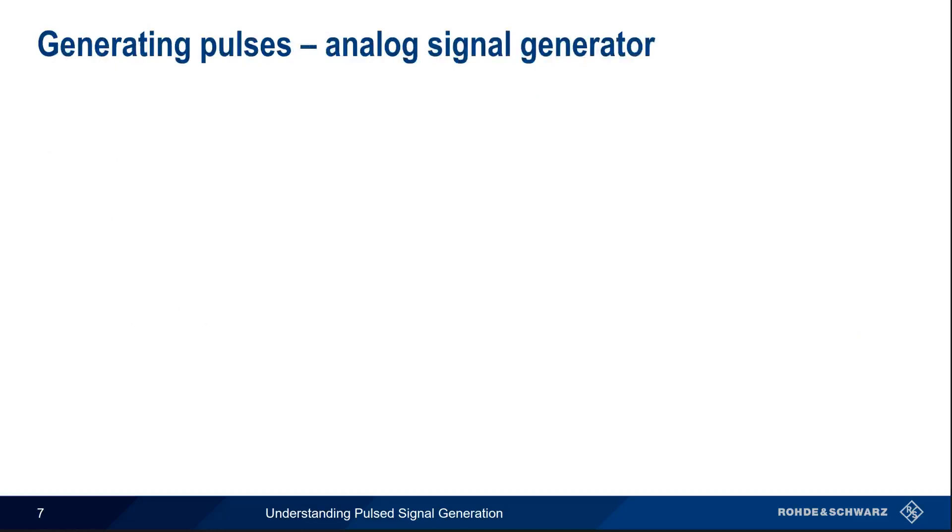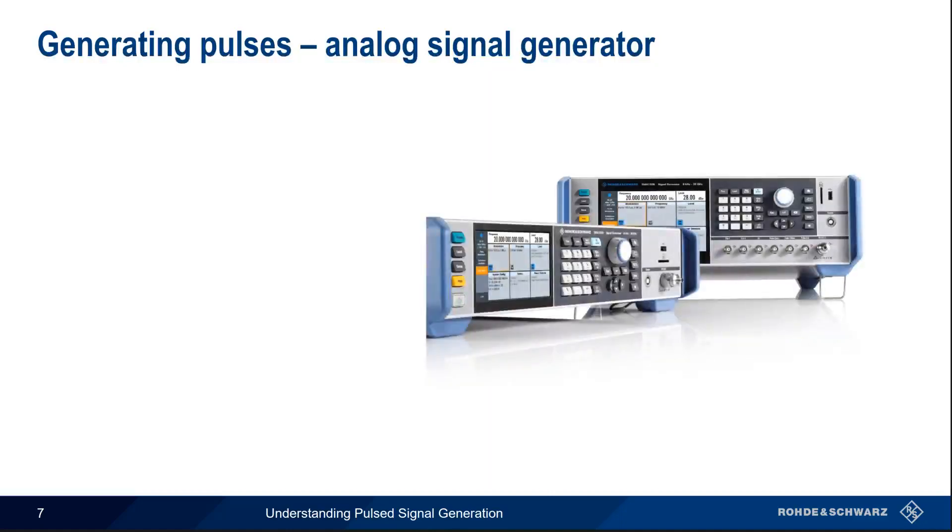What are our options when it comes to generating pulses? Both analog and vector signal generators can be used to create pulse signals, but there are important differences between them. Generally speaking, analog signal generators can only create unmodulated pulses, although some types of basic pulse modulation, like linear FM or chirped pulses, may also be possible.